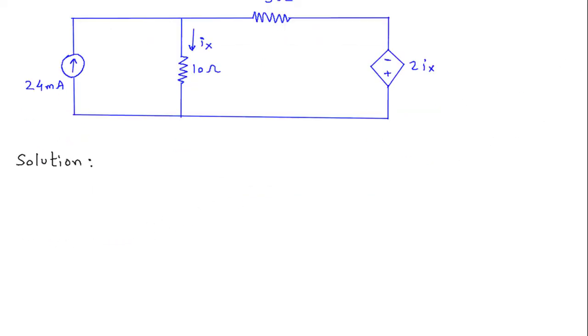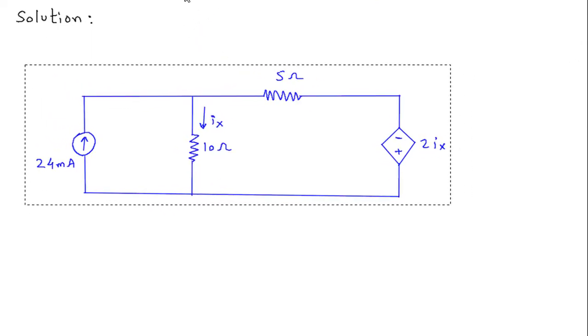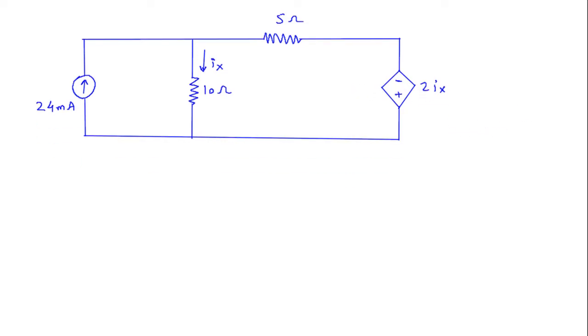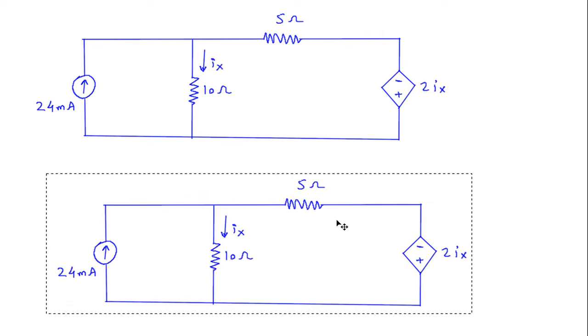Solution, first of all we will redraw the circuit. Now as we can see, this is a current controlled voltage source, so we can convert it into its equivalent current source.